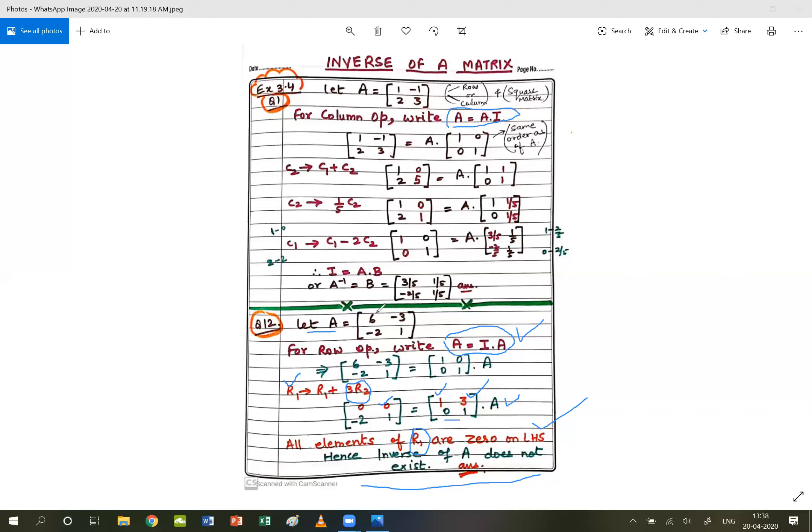So, this question is clear. In row operations, how do we start? A is equal to I times A. What do row operations mean?